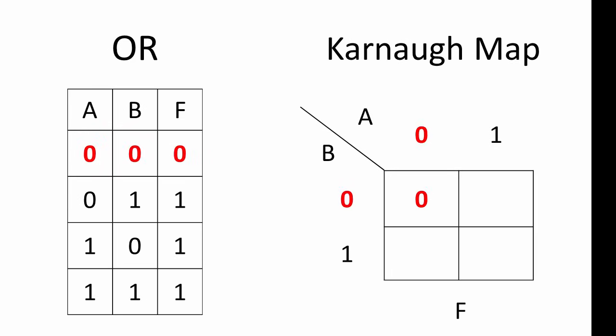Now we can populate the K-map. We can see from the truth table that when A is 0 and B is 0, the output is 0. When A is 0 and B is 1, the output is 1. When A is 1 and B is 0, the output is 1. And when A is 1 and B is 1, the output is 1. Our K-map is ready for use, and we'll see this particular one again later.